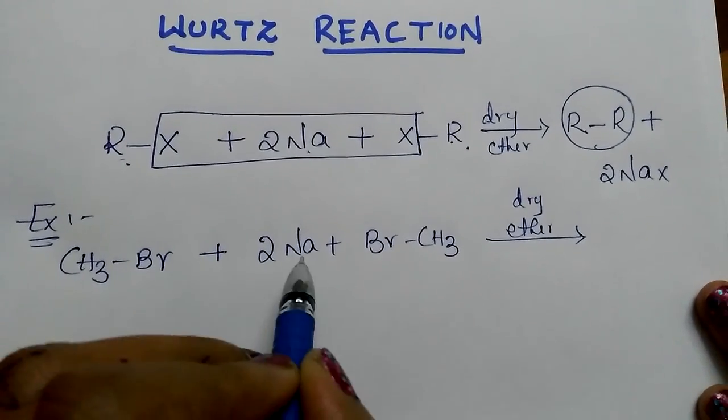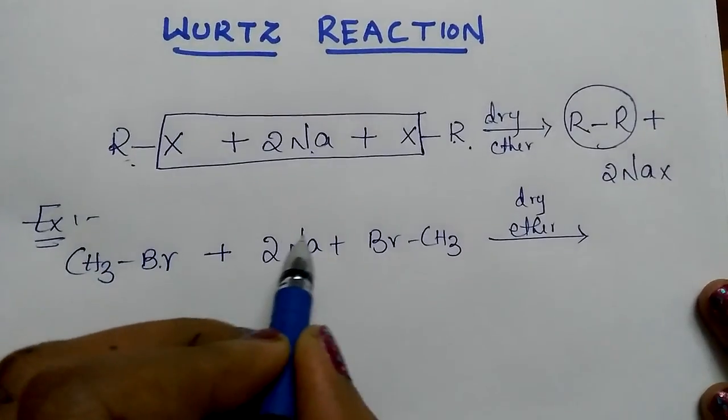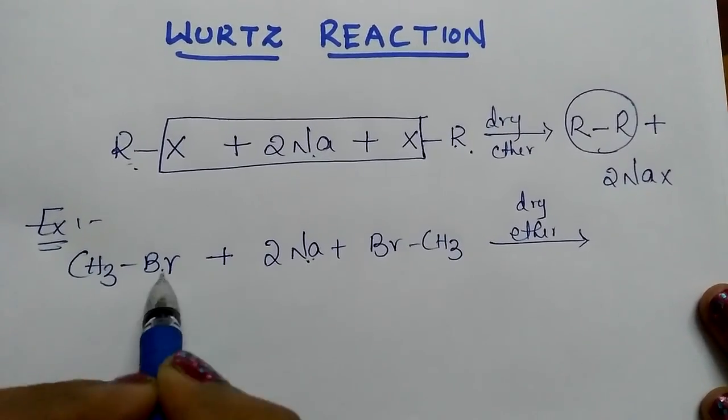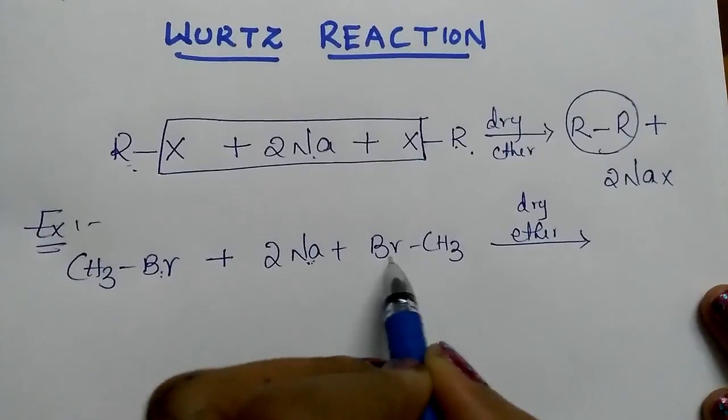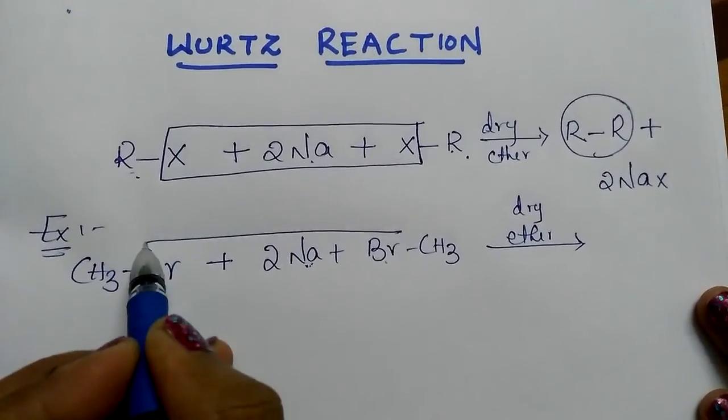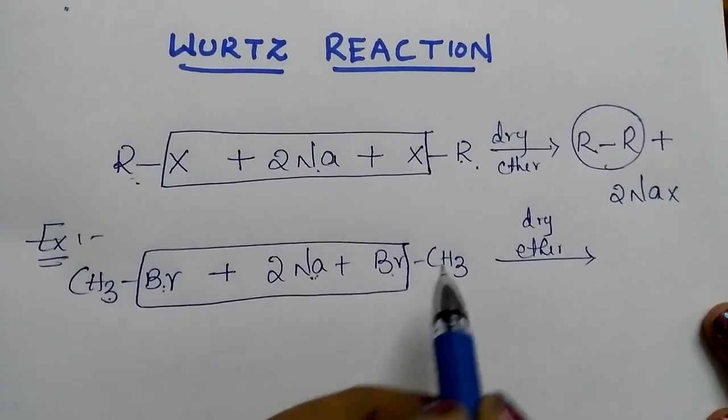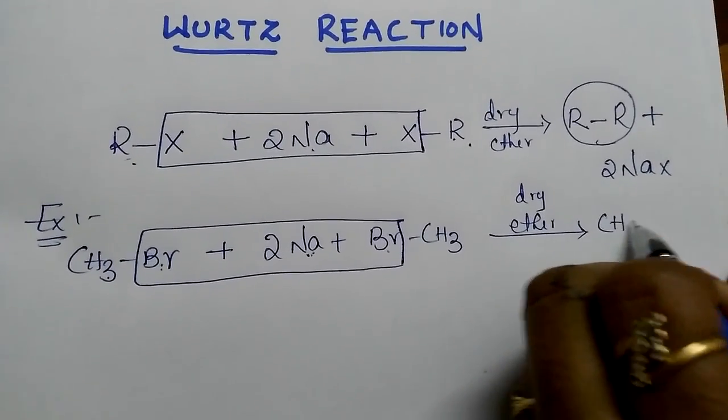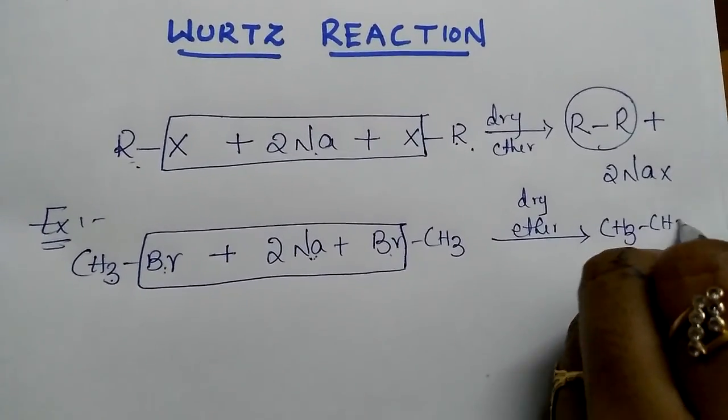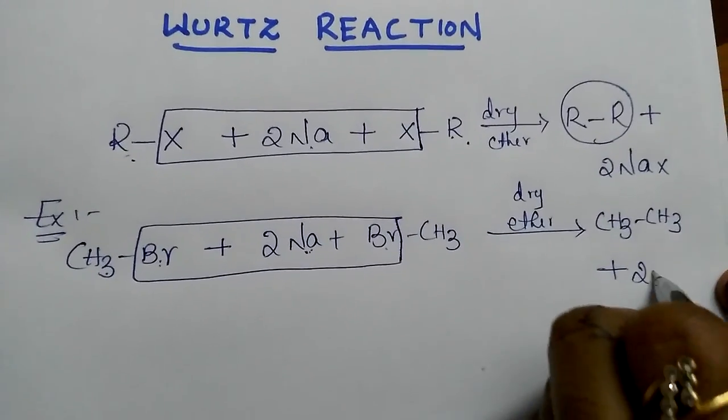Here sodium and bromide ion combine to form NaBr. Totally 2 moles of NaBr is liberated and CH3-CH3 formed as ethane plus 2 NaBr.